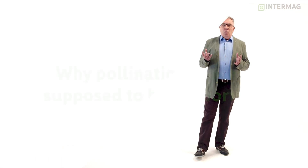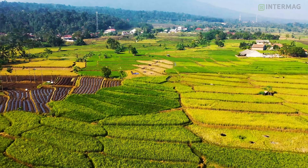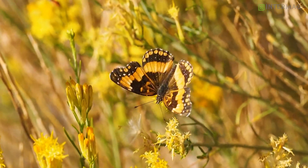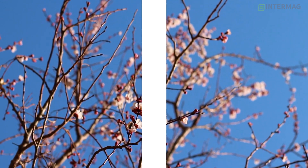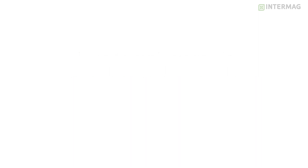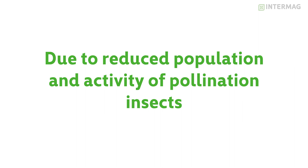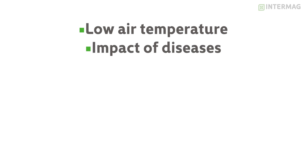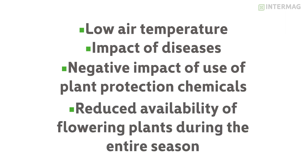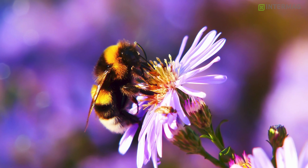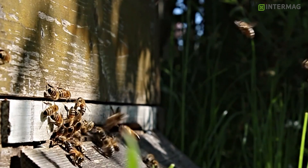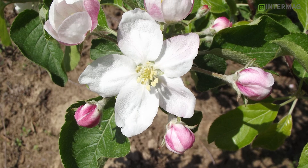Why is this process supposed to be supported? This is a natural process, which means natural conditions are not always very good for it to run properly. We need to support pollination due to bad weather conditions during flowering, due to the reduced population and activity of pollinating insects — which is very, very important — low air temperature, impact of diseases, negative impact of plant protection chemicals, and finally the reduced availability of flowering plants during the entire season. There are many factors which could really effectively influence the pollination process and ultimately the seed creation process.